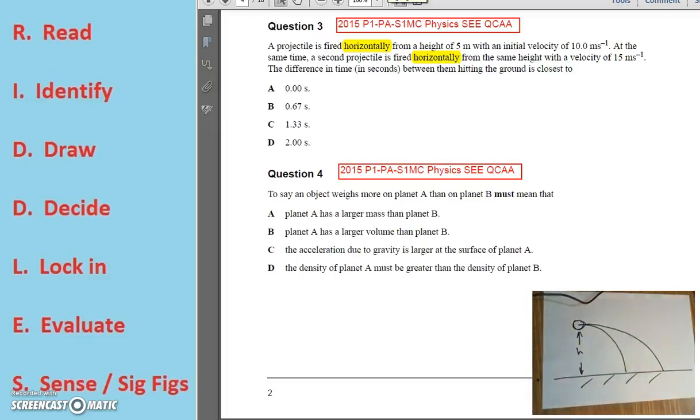But because they are being fired from the same height, both with a vertical initial velocity of 0, they fall the same vertical height. Therefore they will hit the ground at the same time. Therefore the correct answer is A, 0 seconds for question 3. Quite the delay, sorry.